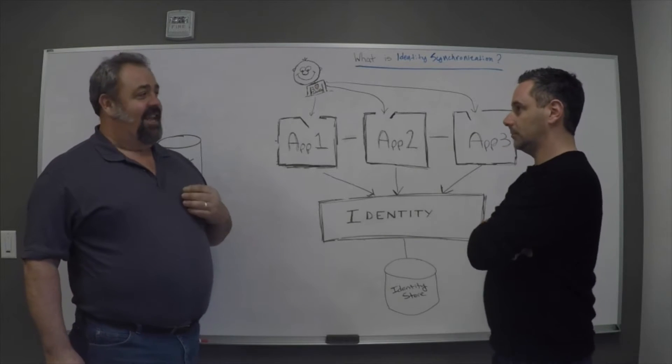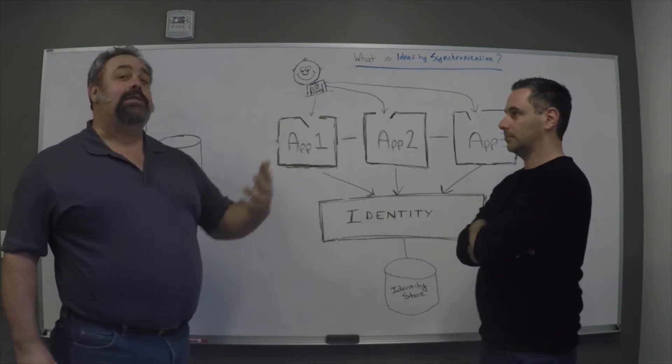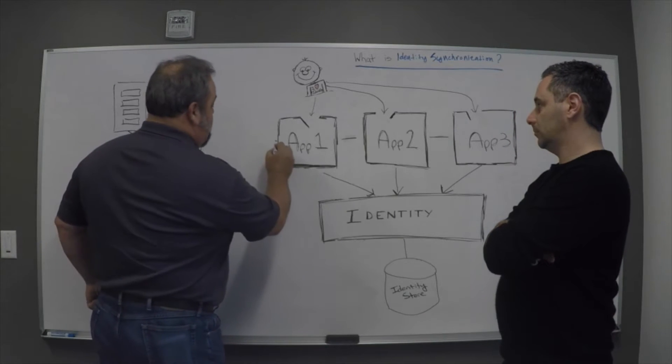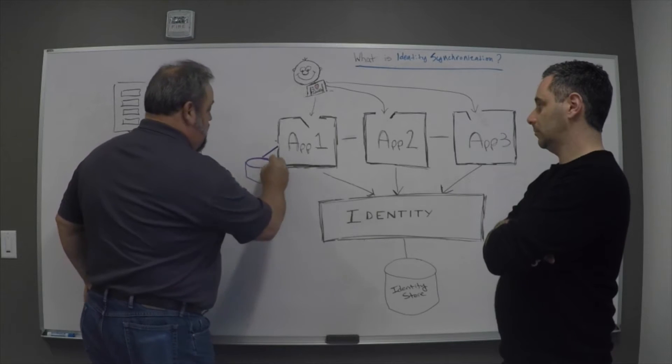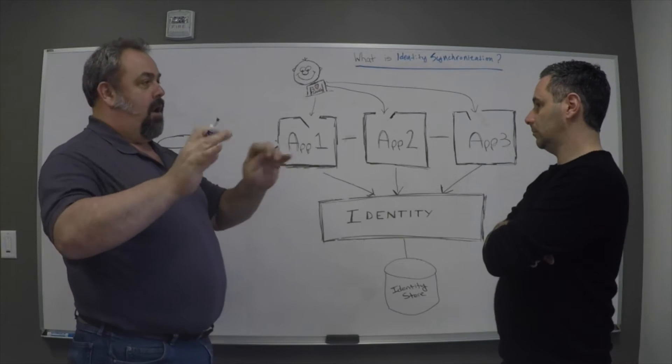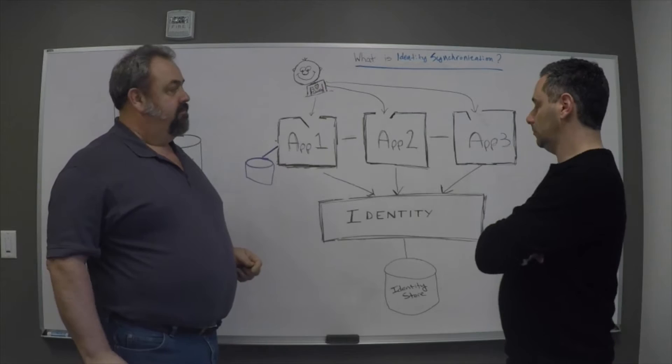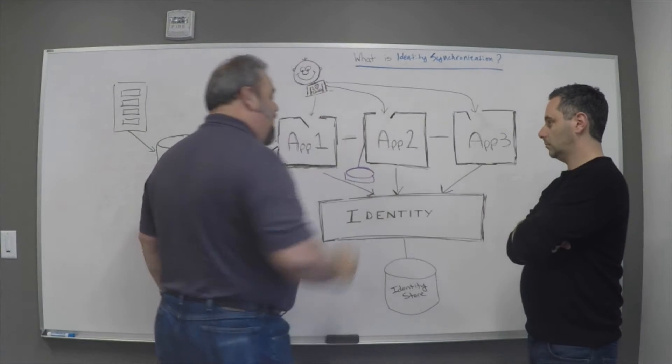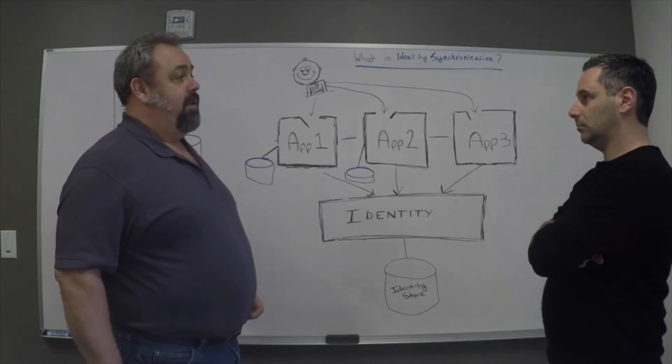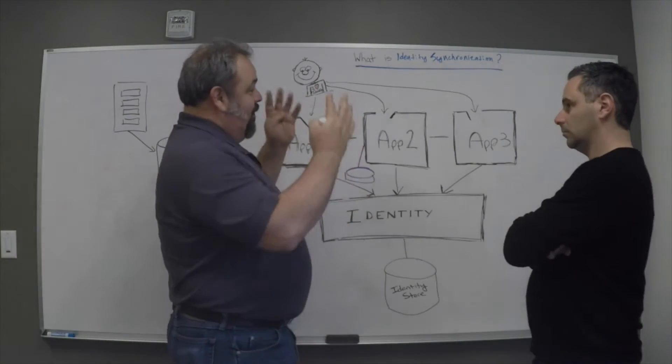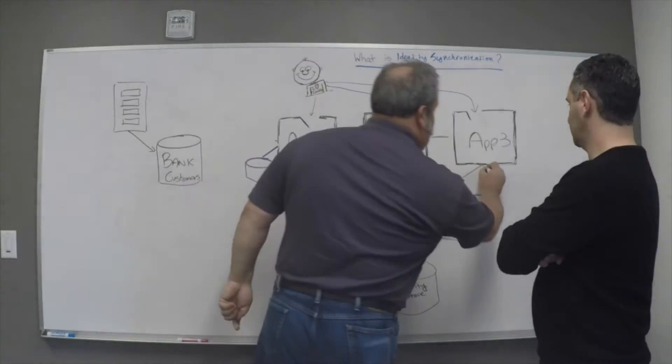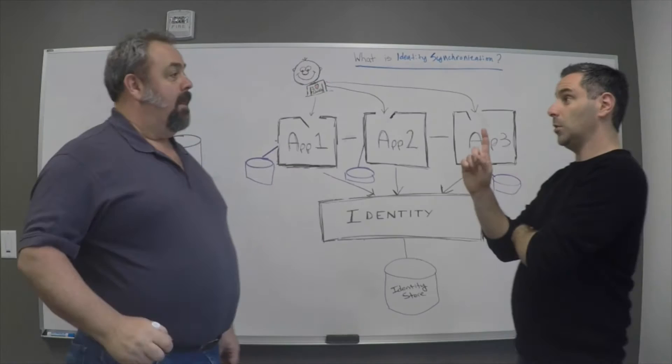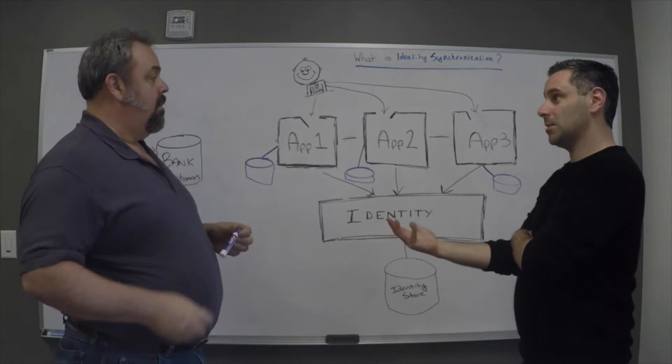I'm going to call them legacy applications. They've got a bunch of these old applications that have been around for a long time. This one handles credit, and it has its own database of users that it needs to manipulate. And this one handles home mortgages, and it has its own database of users that it needs to deal with. And I don't know what the third one does—checking accounts or something—but it also has a database inside of this.